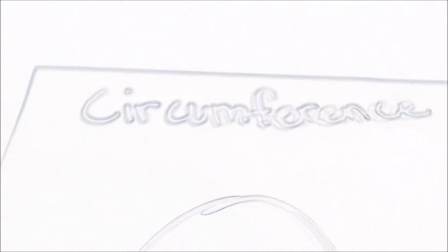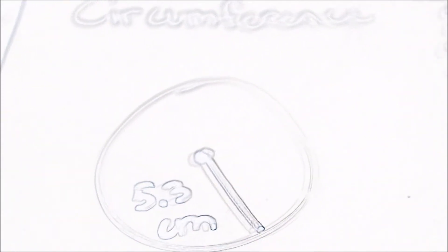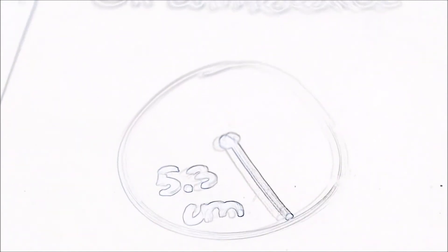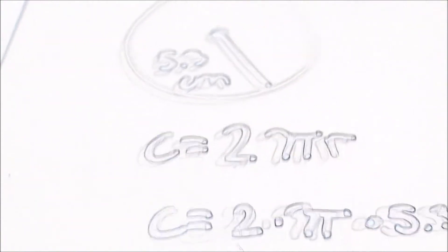Another example is intersecting secant. Here's an example. Another example is circumference. Here's a diagram. We know that the radius is 5.3. So we are going to use a formula. C equals 2 times pi times r.